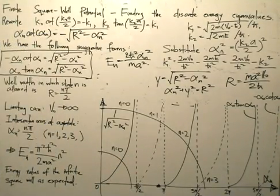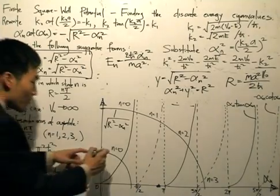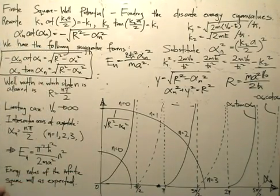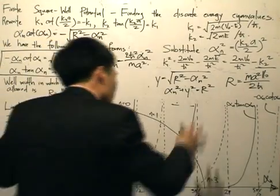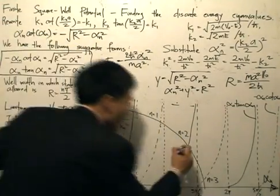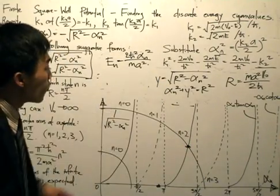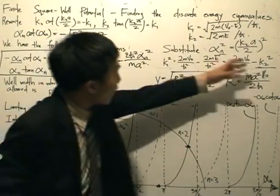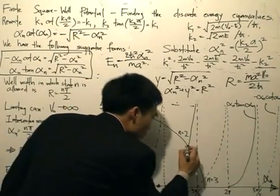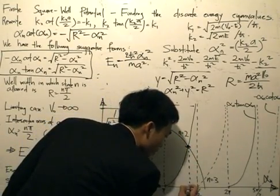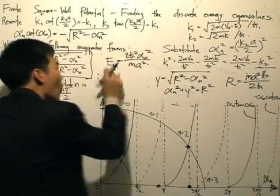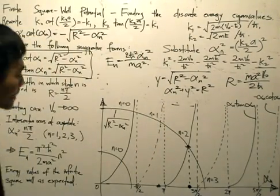The square root of r squared minus alpha_n squared is given by this solid arc, which is a circle of radius r. All we need to do is look at the graph: the intersections for a given well width a and potential v₀ give the solutions for alpha_n. Putting those alpha values into the energy equation gives us the energy values.